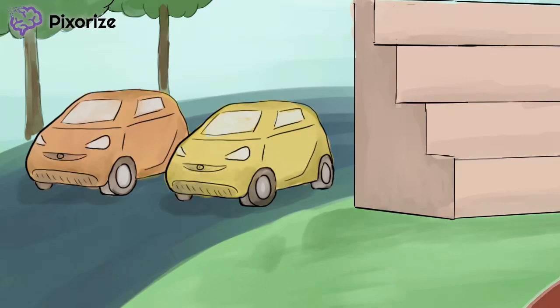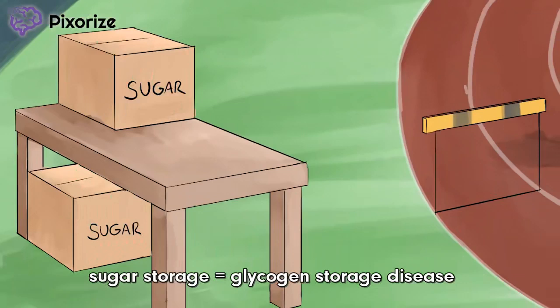Next, take a look at these refreshments set out for our hurdlers. See the boxes of sugar? I guess the hurdlers are trying to carboload before their race. Boxes and sacs storing sugar are Pixarize's recurring symbol for glycogen, which similarly stores sugar for later use by the body. These boxes of sugar are here to help you remember that McArdle disease is a glycogen storage disorder.